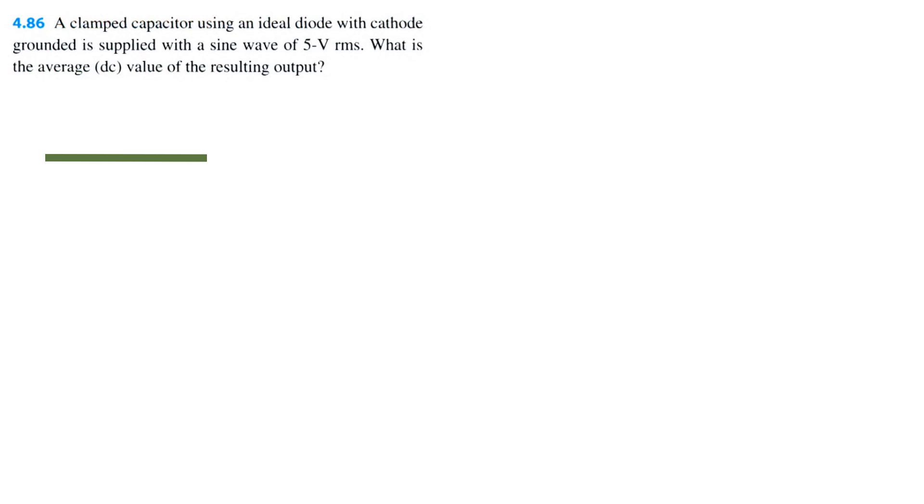So here we are at problem 4.86. A clamp capacitor using an ideal diode with cathode grounded is supplied with a sine wave of 5 volts root mean square. What is the average DC value of the resulting output?